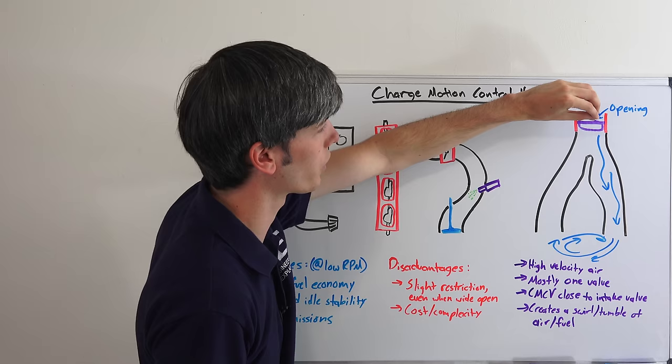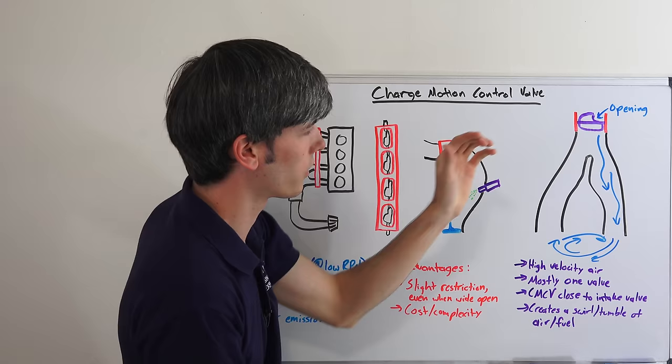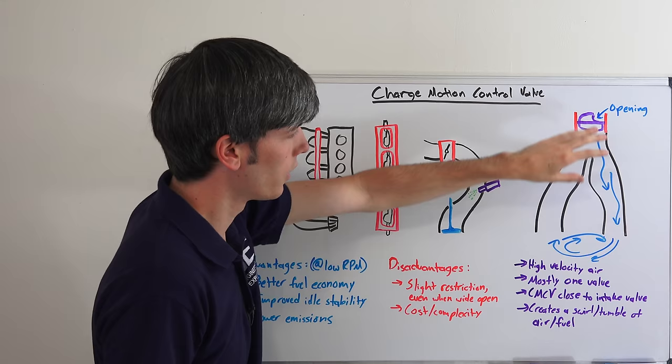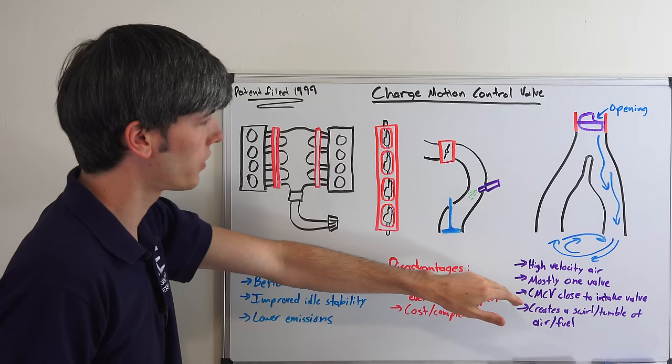And you're also restricting that airflow significantly, so not much air can pass, and you're really going to speed up that airflow there, because you're channeling it into a much smaller area. So what this is doing, you're getting higher velocity air, you're sending most of that into one valve.